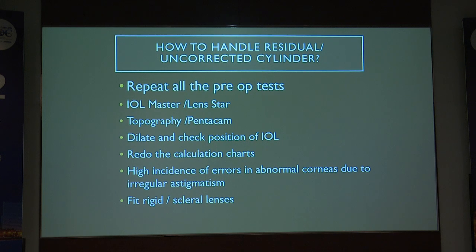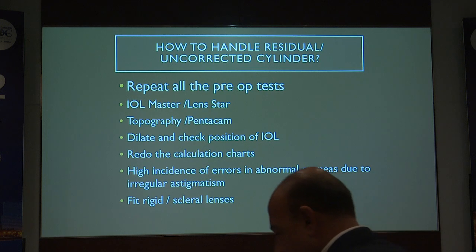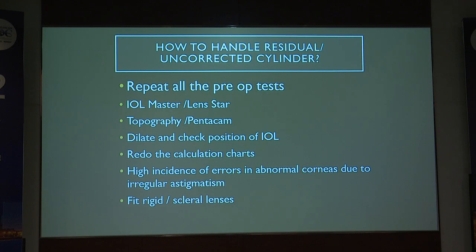The important plan when you have a refractive surprise like this is to repeat all your pre-op tests — IOL Master, Lens Star, topography, Pentacam — and dilate to check the position of the IOL. We were racking our brains trying to find what we did wrong, then went back and looked at the lens picture. We found we had to place it at 0-180 degrees, not along the axis. There's a high instance of errors in abnormal corneas with irregular astigmatism.